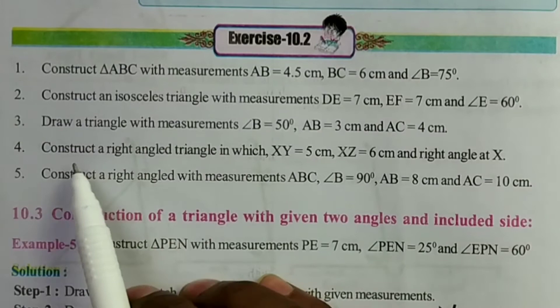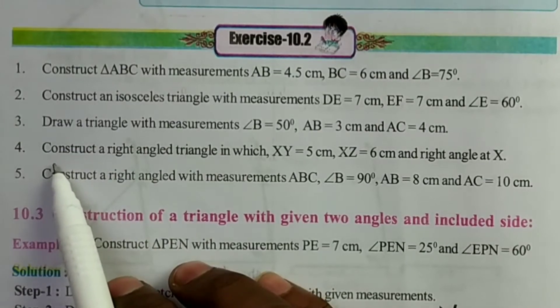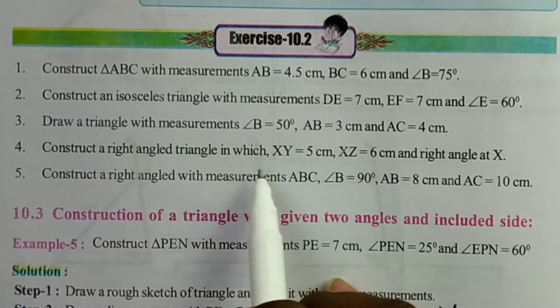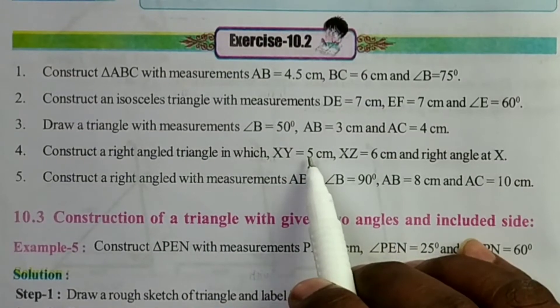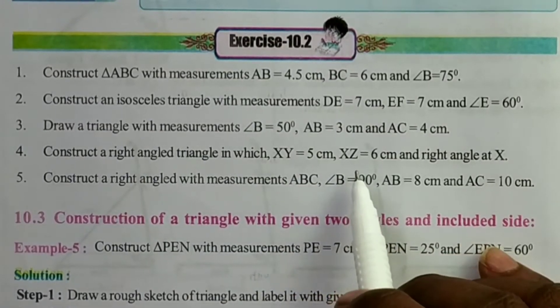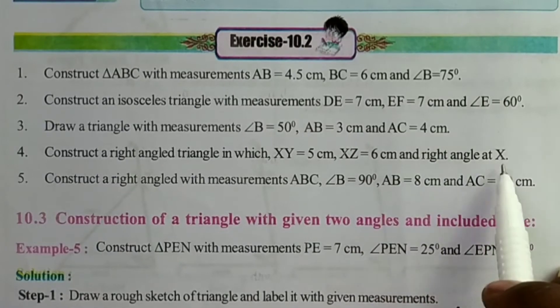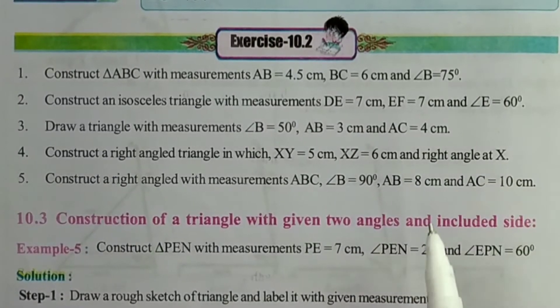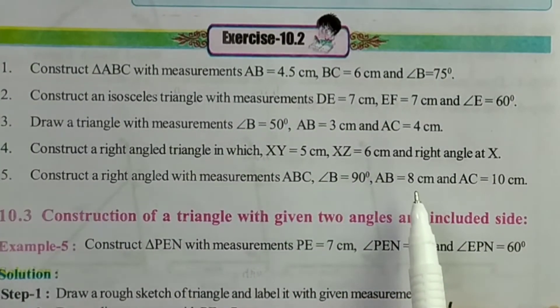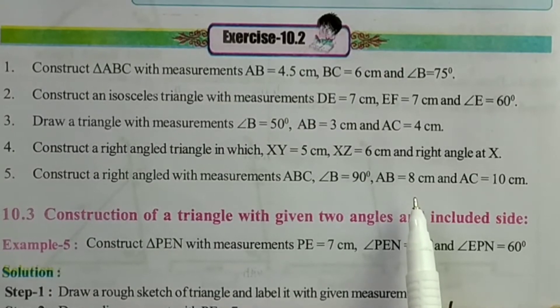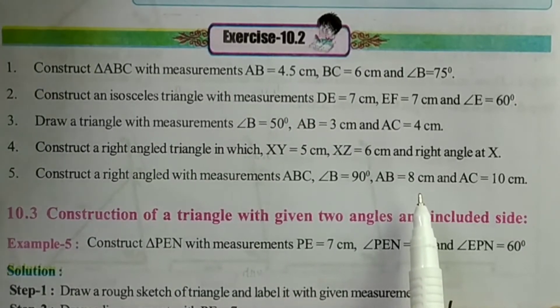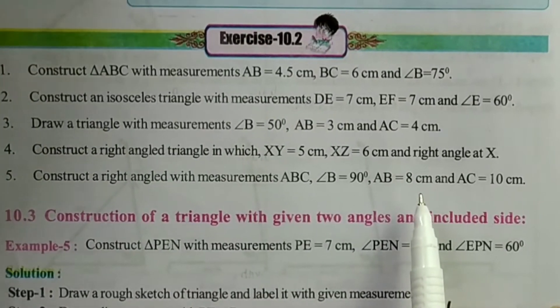The question is the fourth one. Construct a right angle triangle in which XY equals 5 cm, XZ equals 6 cm and right angle at X. This is also an easy construction.